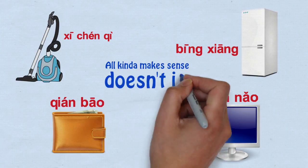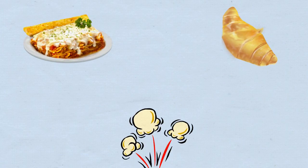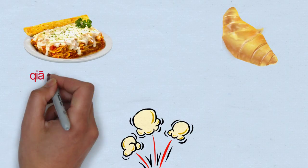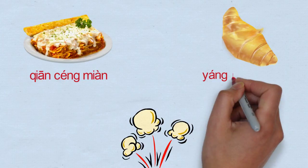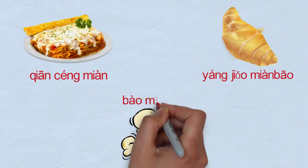All kind of makes sense, doesn't it? When it comes to Western food, the creative juices were clearly flowing as well. How about having some thousand-layer noodle, goat horn bread, or explosive rice flowers?